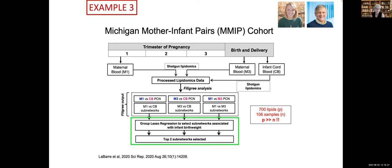I really want to draw your attention to example number three, because here we're doing something slightly different. In this case, data comes from the Michigan Mother-Infant Pairs cohort. Lipidomics data were generated at our metabolomics core — from maternal blood at the first trimester and at the third trimester of pregnancy, and infant cord blood at the time of delivery. Shotgun lipidomics analysis was performed.